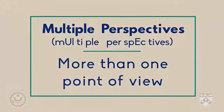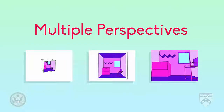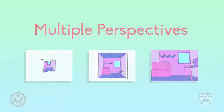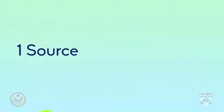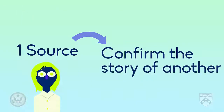Multiple perspectives means more than one point of view on the same thing. When a journalist is writing a story, the more perspectives they can get, the better. We will then look at how one source can confirm the story of another.